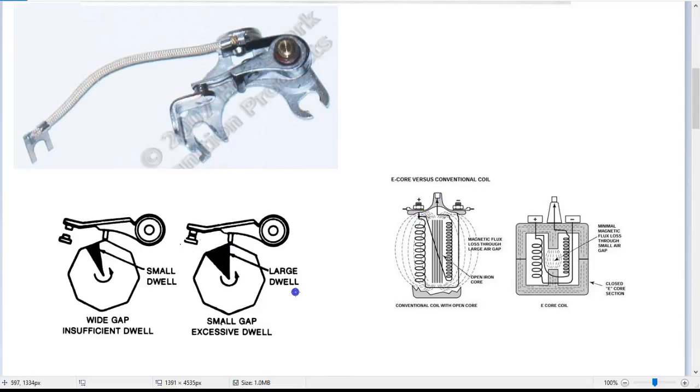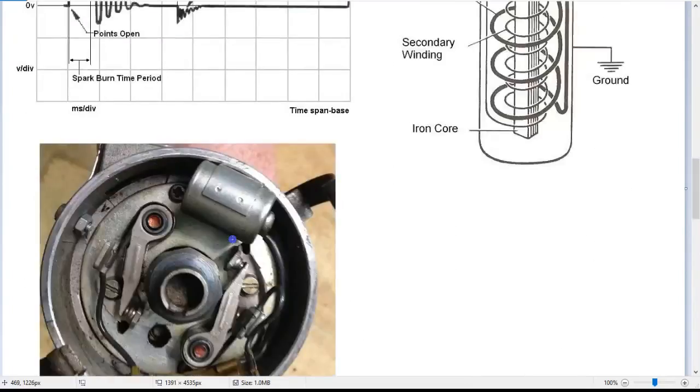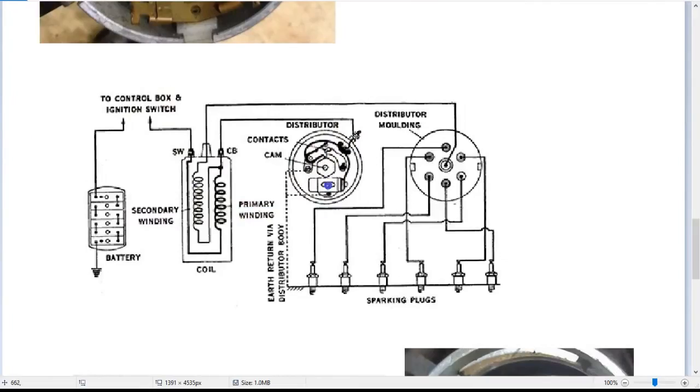When the points open, the field collapses into the secondary coil and we get our spark. So the points have another addition to them which is a condenser or capacitor. What the job of the capacitor is to do is as the points open, there's a tendency for the voltage to try and cross the gap between the points. Now the condenser does the job of continuing the voltage running down through the condenser rather than arcing across the points.